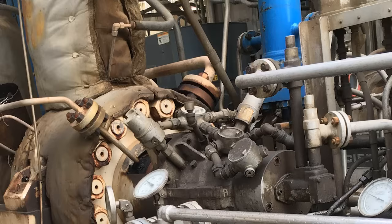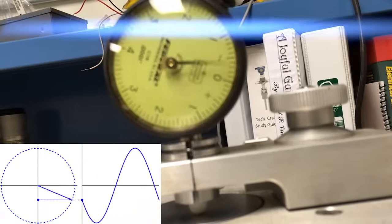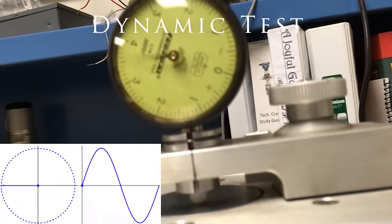Vibration monitoring equipment can be tested by producing a known amount of simulated vibration on a machine and verifying the proper response of the equipment. This is typically referred to as a dynamic test.